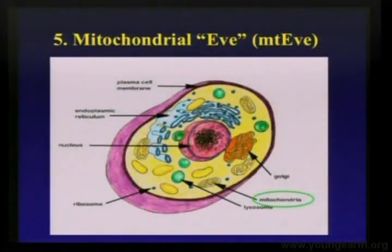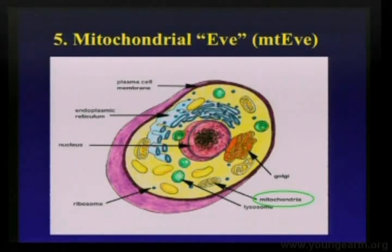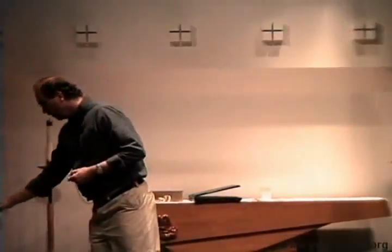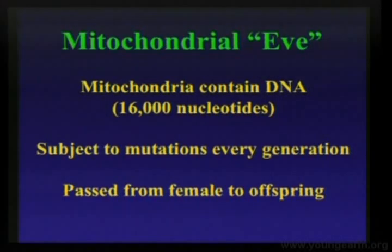Mitochondrial DNA — I'll finish with this. In each of your cells — most of your cells — you have a little organelle called a mitochondria. The mitochondria contains its own piece of DNA, separate from all the chromosomes in the nucleus. Because this DNA is in the mitochondria and not in the nucleus, it's very easy to separate and not have it contaminated or confused with chromosomal DNA. Also, because the mitochondrial DNA is only 16,000 nucleotides, as opposed to billions upon billions of nucleotides, it's much easier to work with. We've been studying mitochondrial DNA for many years.